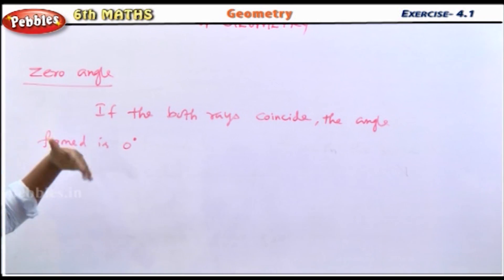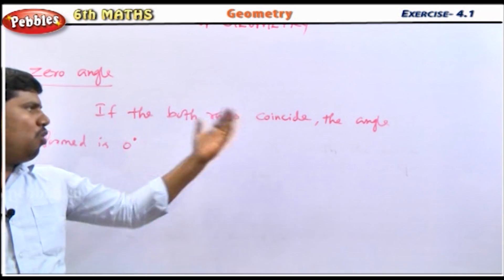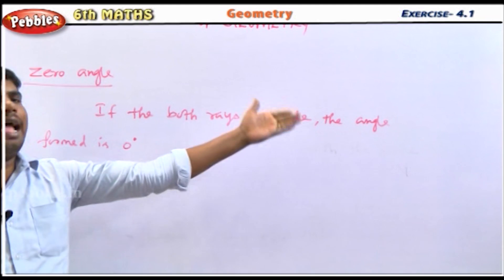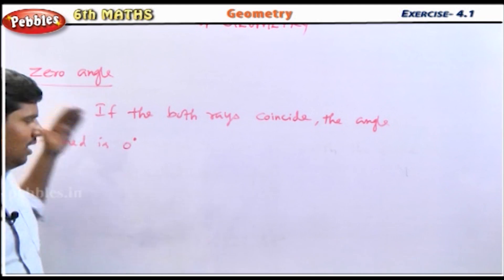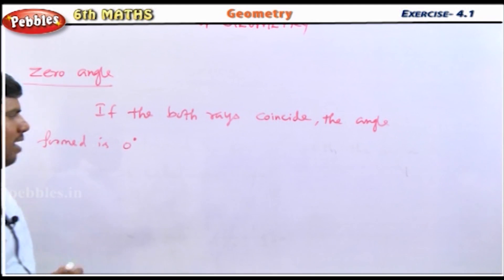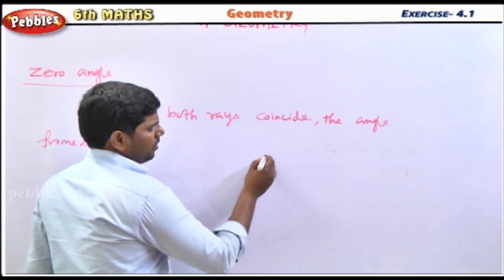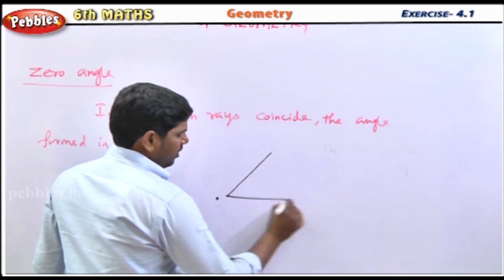If both rays coincide, the angle formed is 0 degrees.